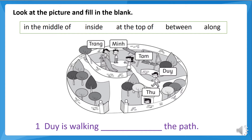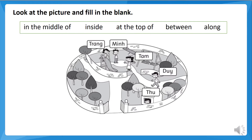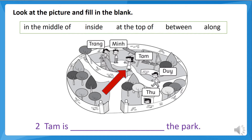The first one: where is Zui? Okay, Zui is walking along the path. Very good. The next person is TAM. Can you find where TAM is? The answer is TAM is in the middle of the park.